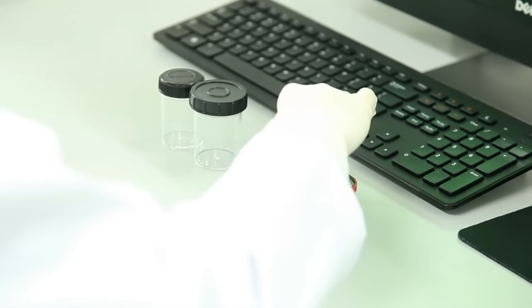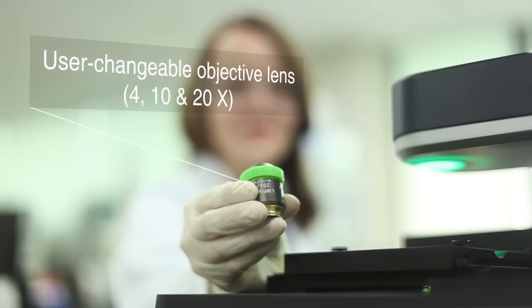Three kinds of objective lenses are available for Julie Stage. Users can change the objectives manually.